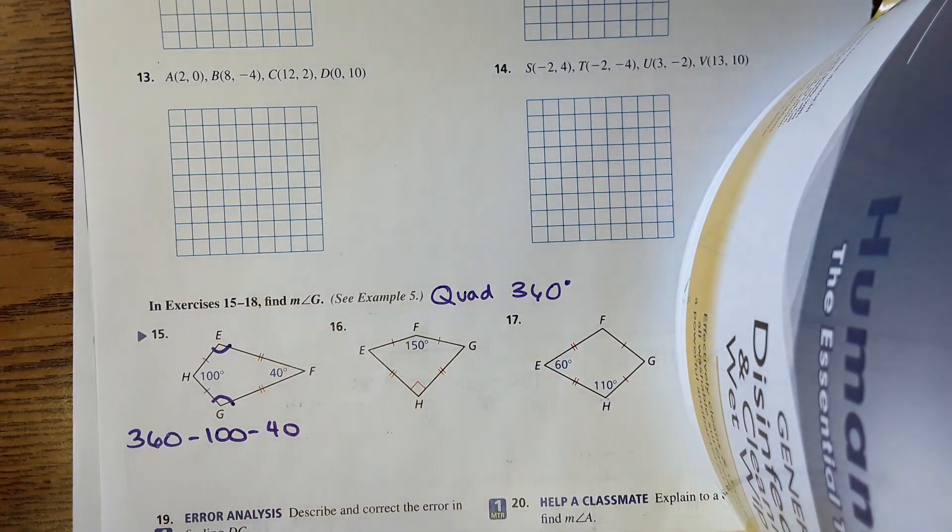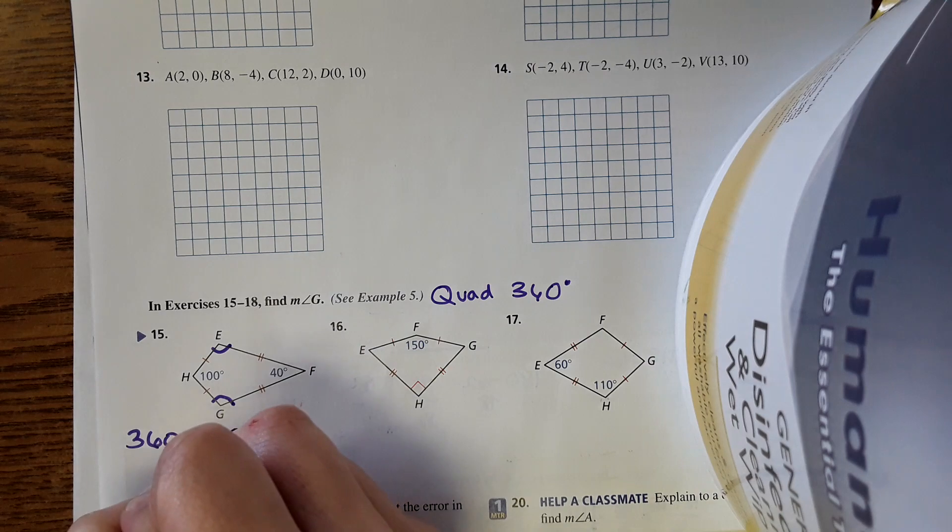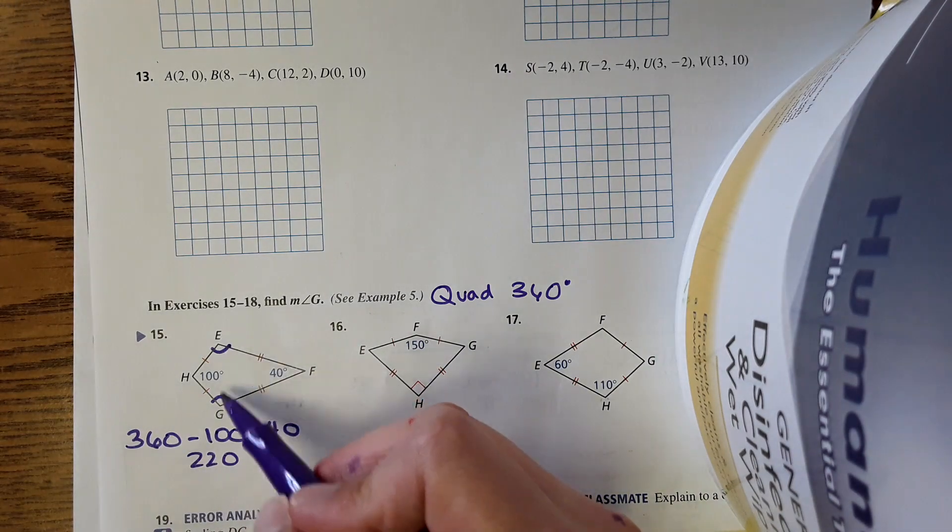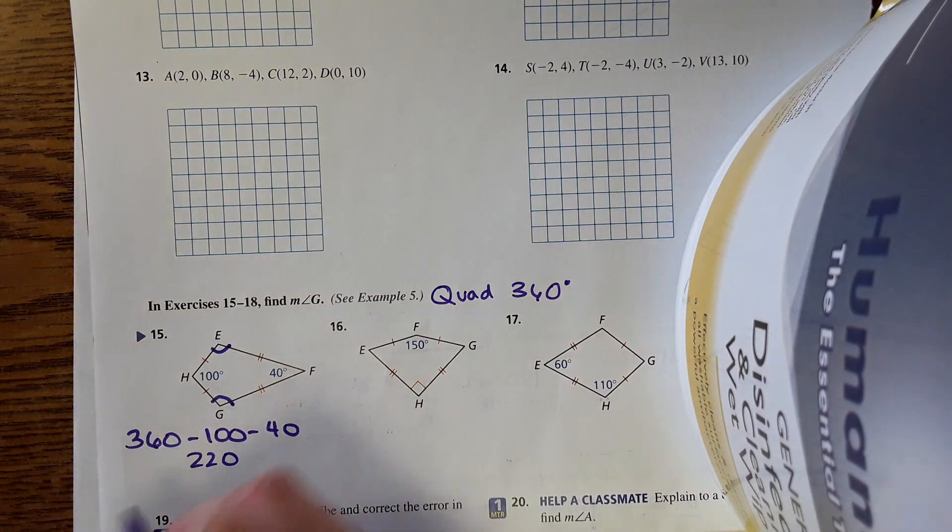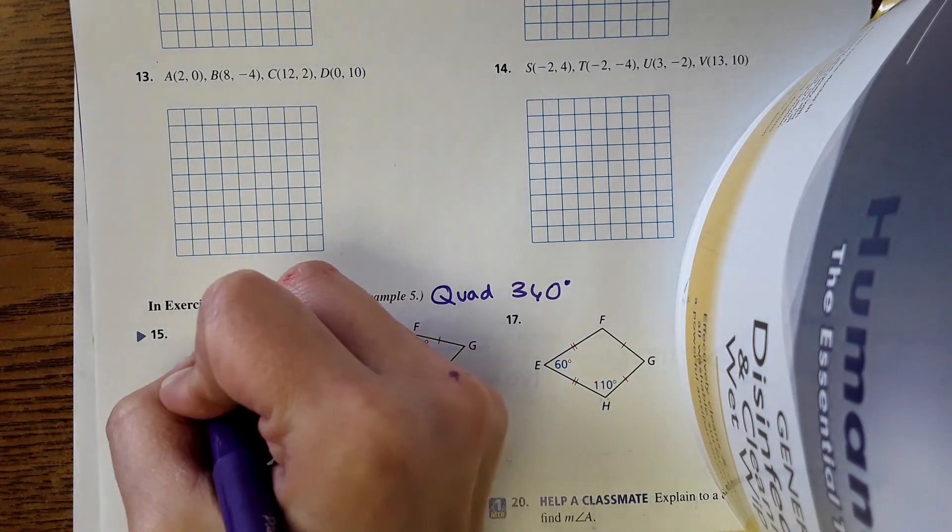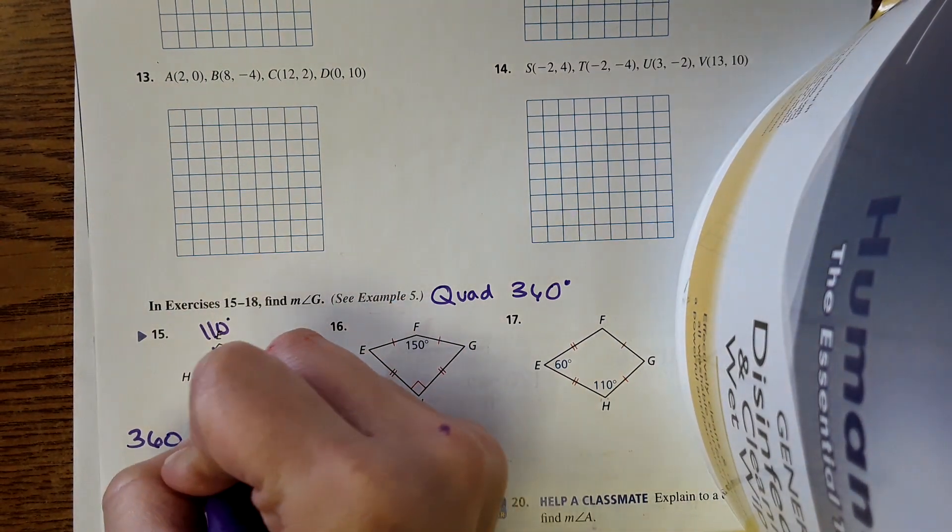And then we get 220, and then that degree measure needs to be spread evenly among those two angles. So next step would be 220 divided by 2 is 110 degrees. So this is 110 and this is 110.